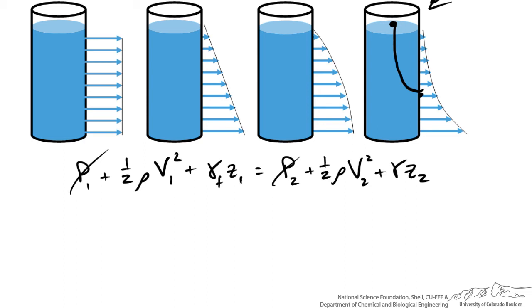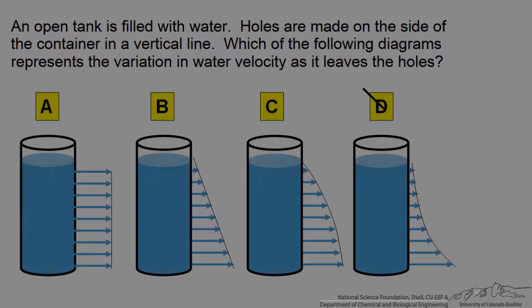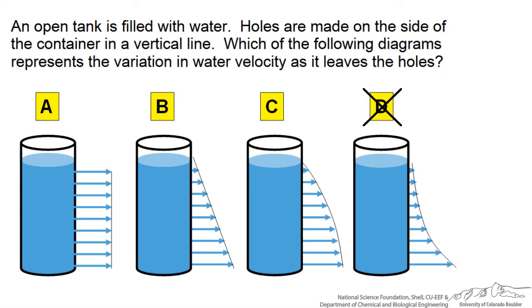Now we have a relationship between the height or the elevation difference between those two points and our kinetic terms, which are composed of these velocities. When we do this, we get a relationship that does not match this profile. So this response is incorrect. Try choosing another answer.